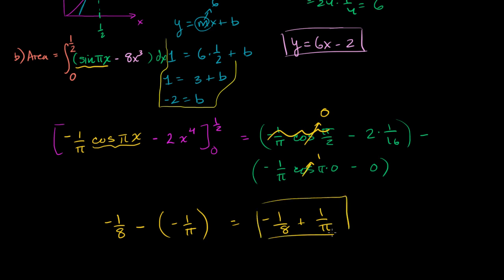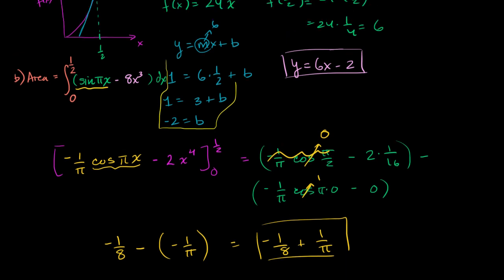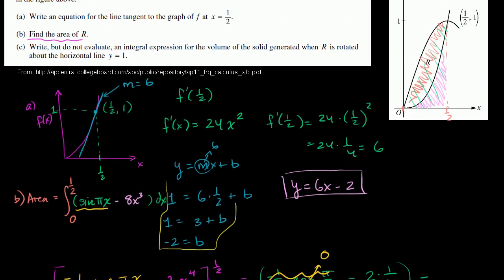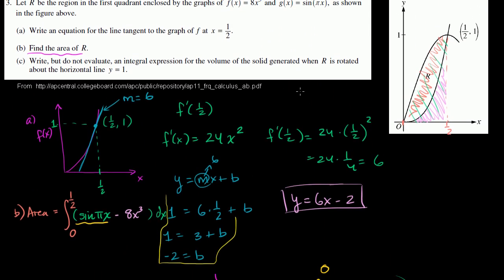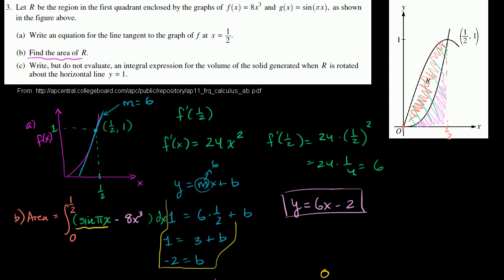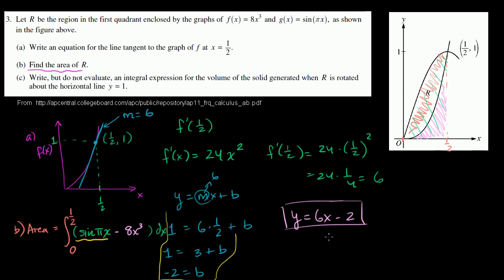And we are done. This part you're not allowed to use a calculator, so this is about as far as I would expect them to expect you to get: negative one eighth plus one over pi. In the next video we will do Part C.